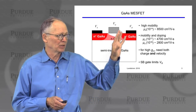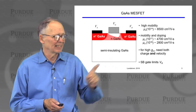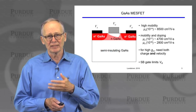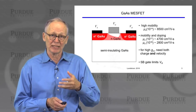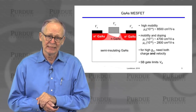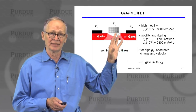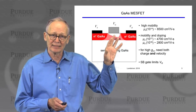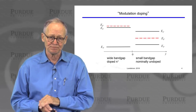Another undesirable feature of the MESFET is that because the gate is a Schottky barrier, we are limited in the voltages we can apply — we can't apply too much forward bias or current will flow. This limitation arose because of the lack of a suitable high-quality oxide like SiO₂, which we have for silicon.